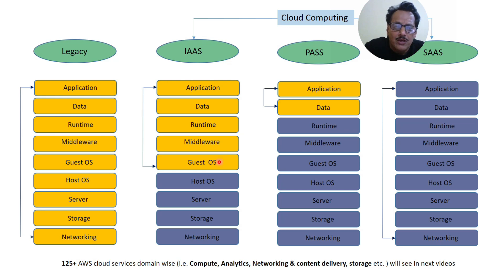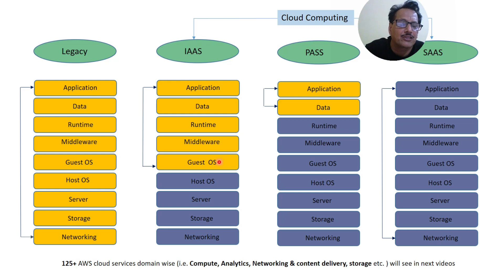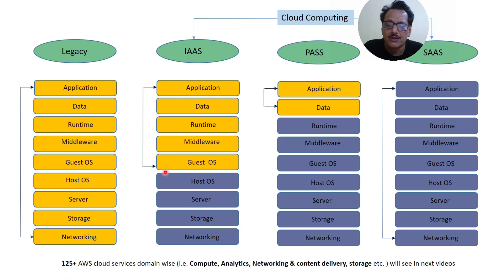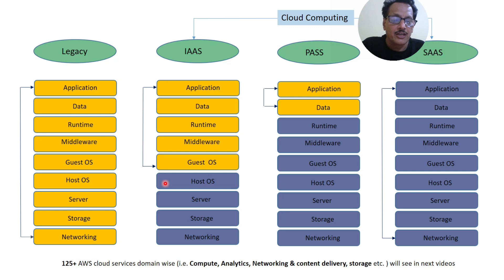For SaaS, the cloud service provider is responsible for everything — network, storage, server, host OS, middleware, runtime, data, and application. Like Gmail: you are not responsible for it; the cloud service provider is responsible. You only need to send and receive mail. There are 125+ AWS services organized domain-wise — compute, analytics, networking and content delivery, storage, and many more — which will be discussed in the next video.